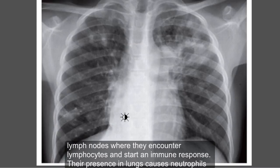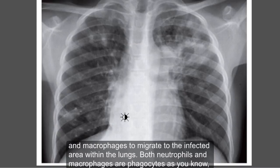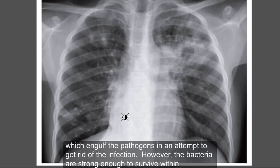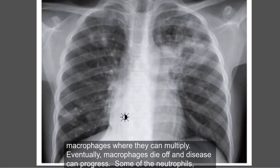Some bacteria enter into the lymphatics and eventually into the lymph nodes, where they encounter lymphocytes and start an immune response. Their presence in the lungs causes neutrophils and macrophages to migrate to the infected area. Both neutrophils and macrophages are phagocytes, which engulf pathogens in an attempt to get rid of the infection. However, the bacteria are strong enough to survive within macrophages, where they can multiply.